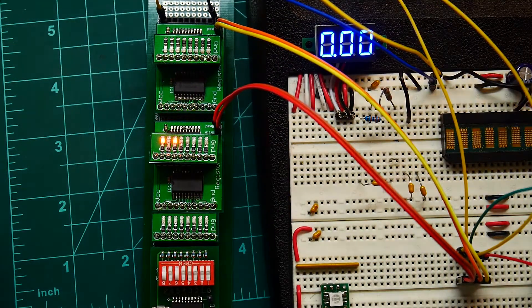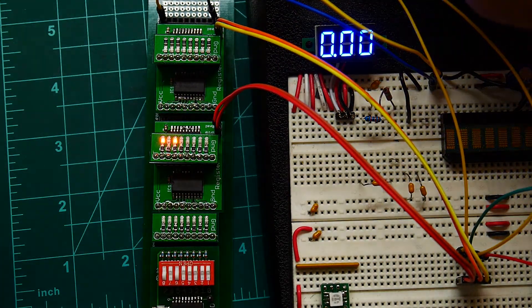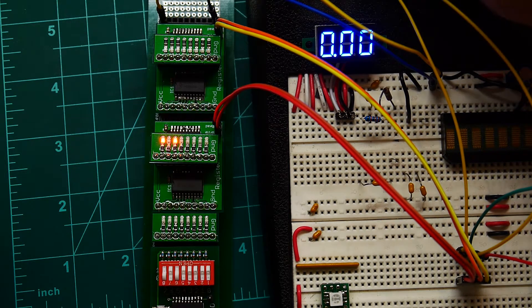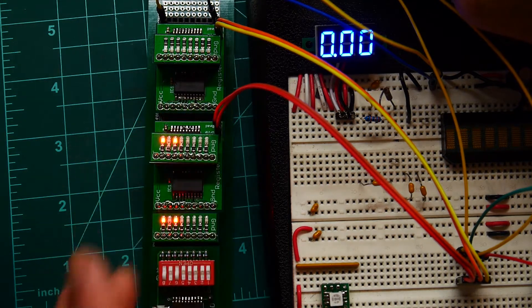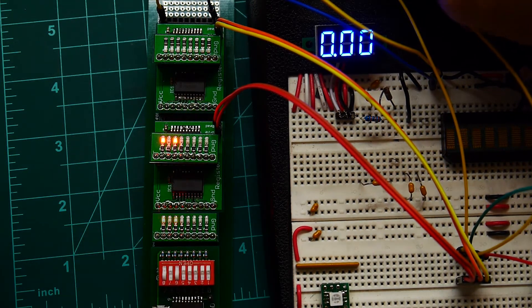So if we want to put that register back on the bus, we can use its read. Let's see, which one is it? This one. We can set the read low and put that value on the bus.